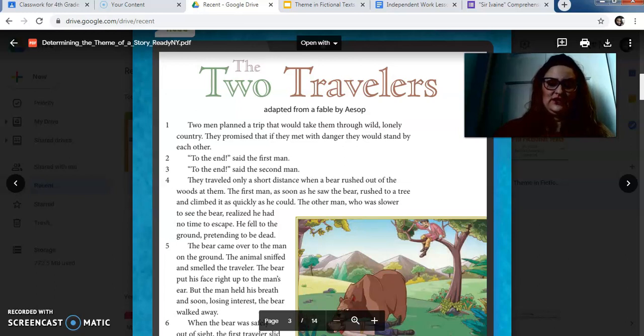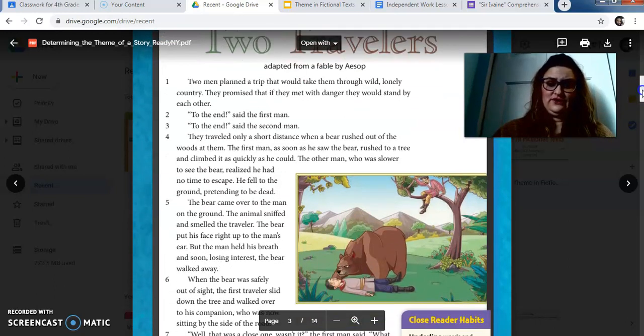They traveled only a short distance when a bear rushed out of the woods at them. The first man, as soon as he saw the bear, rushed to a tree and climbed it as quickly as he could. The other man, who was slower to see the bear, realized he had no time to escape. He fell to the ground, pretending to be dead. So already I'm noticing something about the first traveler and the second traveler.